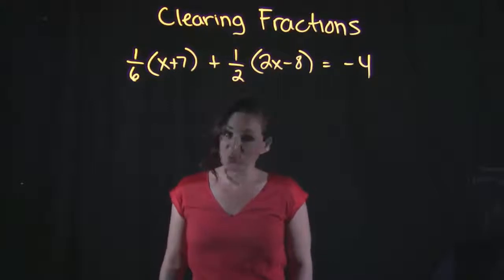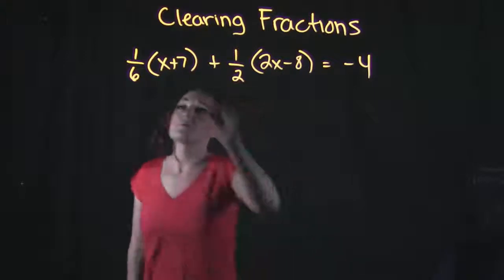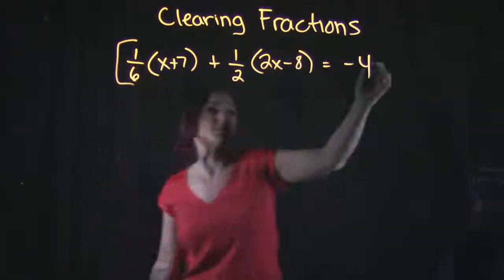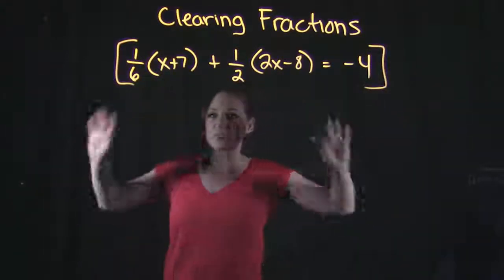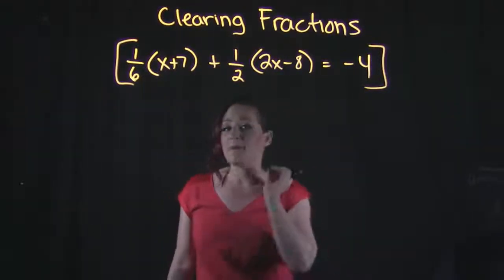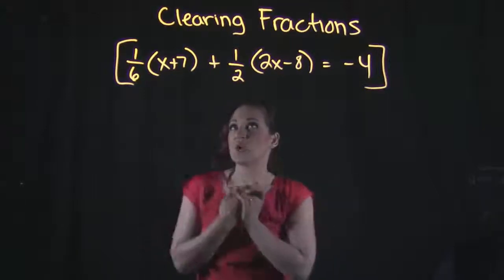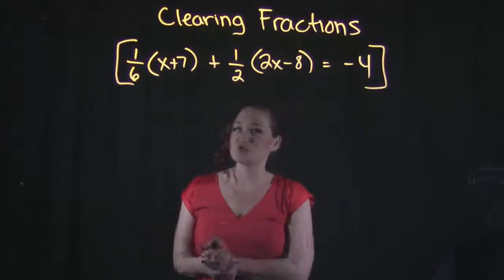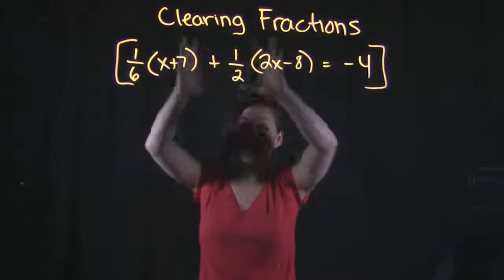There's one step in order to get rid of the fractions in your equation, and that is to multiply the entire equation by your lowest common denominator. So I'm going to go ahead and put brackets around this equation, and I want to multiply this equation by a number that is going to allow these fractions to be gone, to clear out.